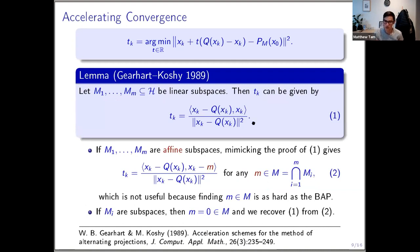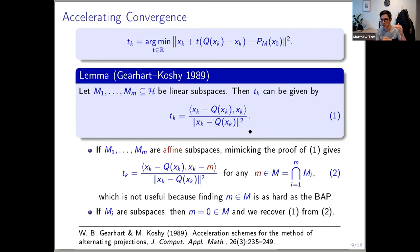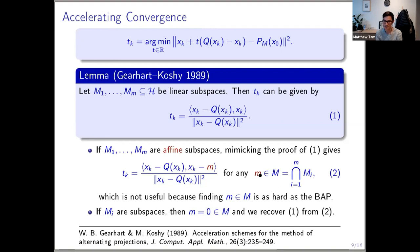This is the first part of Gearhart and Kirsch's result: for linear subspaces, here's an efficient way to use the algorithm. Normally you can apply a translation to extend linear results to affine results. If you try that in the proof just shown — translating projectors onto affine subspaces to projectors onto the parallel linear subspaces and then untranslating — what you end up with is a formula that's almost identical except you have a minus m term, where m is any point in the intersection of the affine spaces.